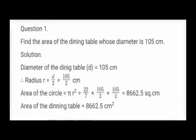Question No. 1: Find the area of the dining table whose diameter is 105 cm. In this problem, diameter is given. First you can convert into radius, then apply the formula for area of the circle.